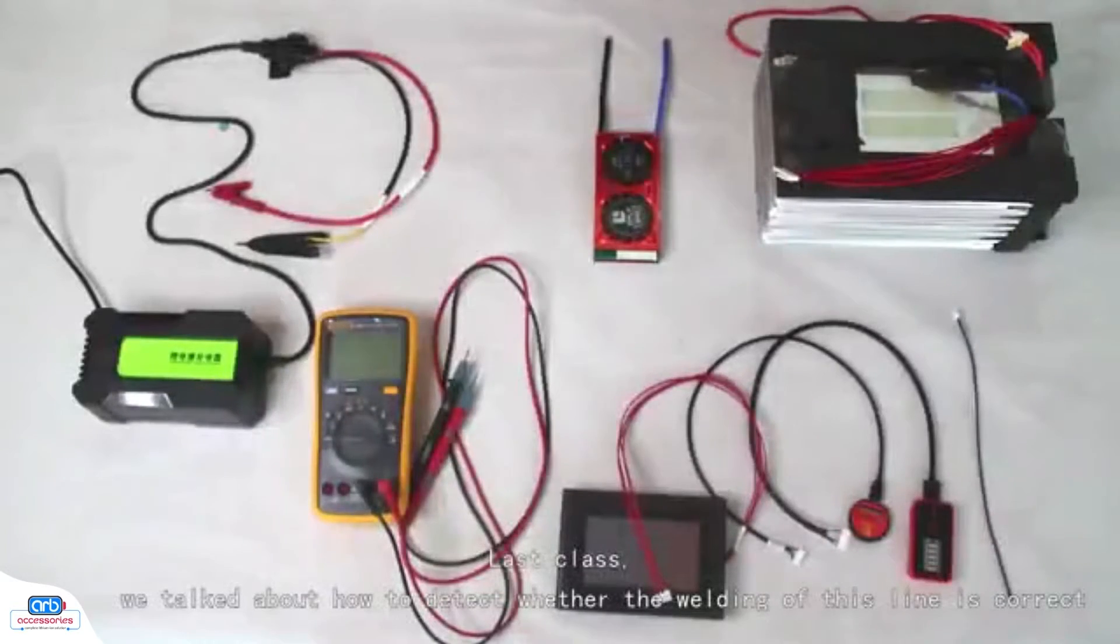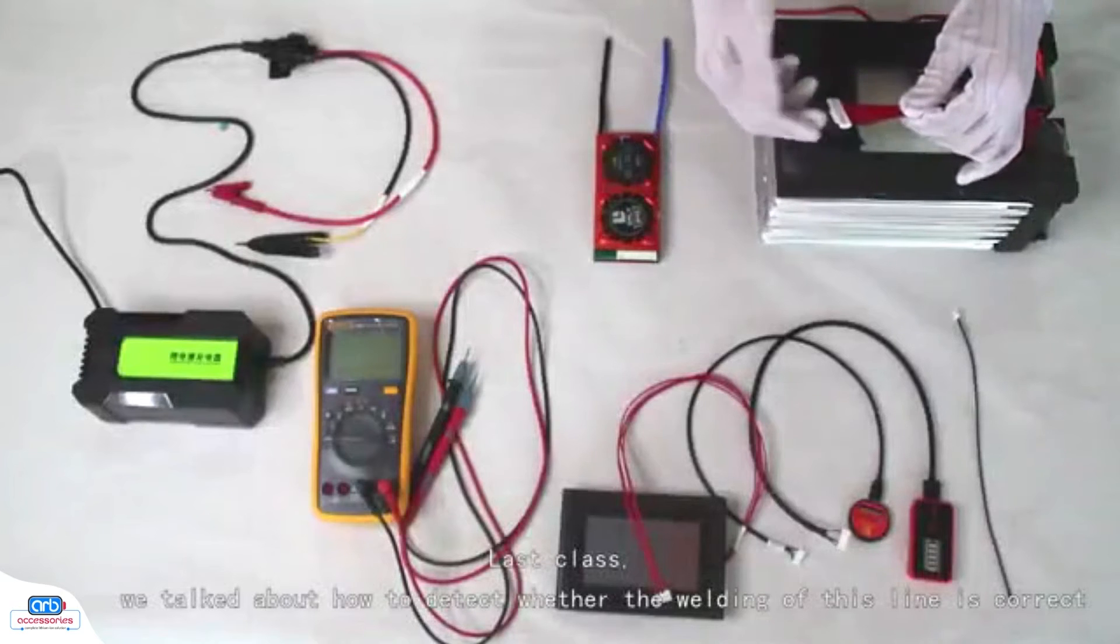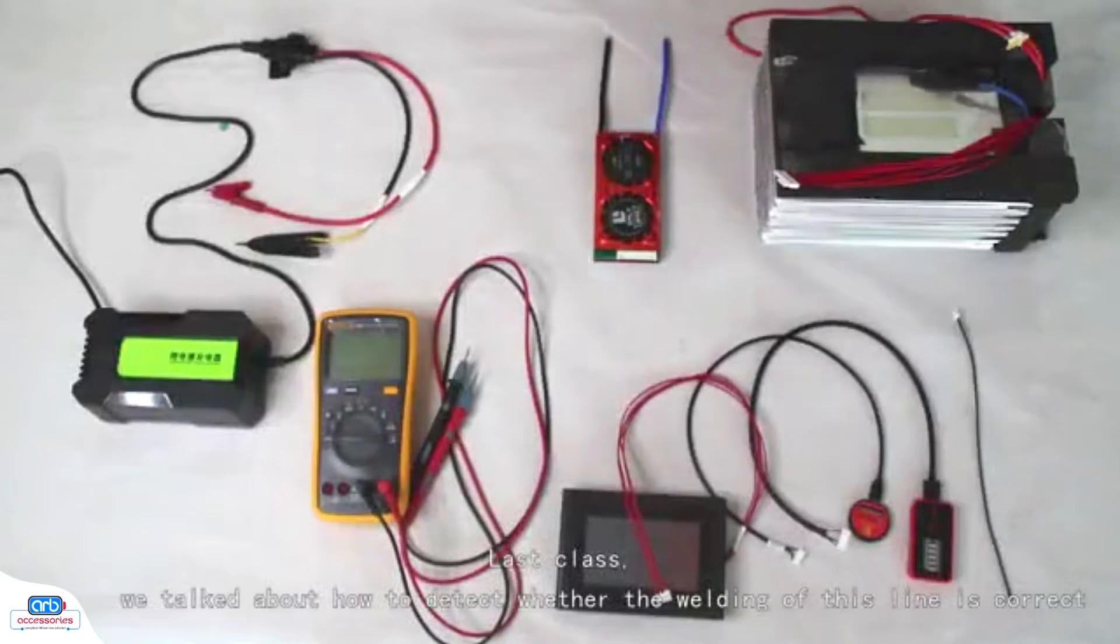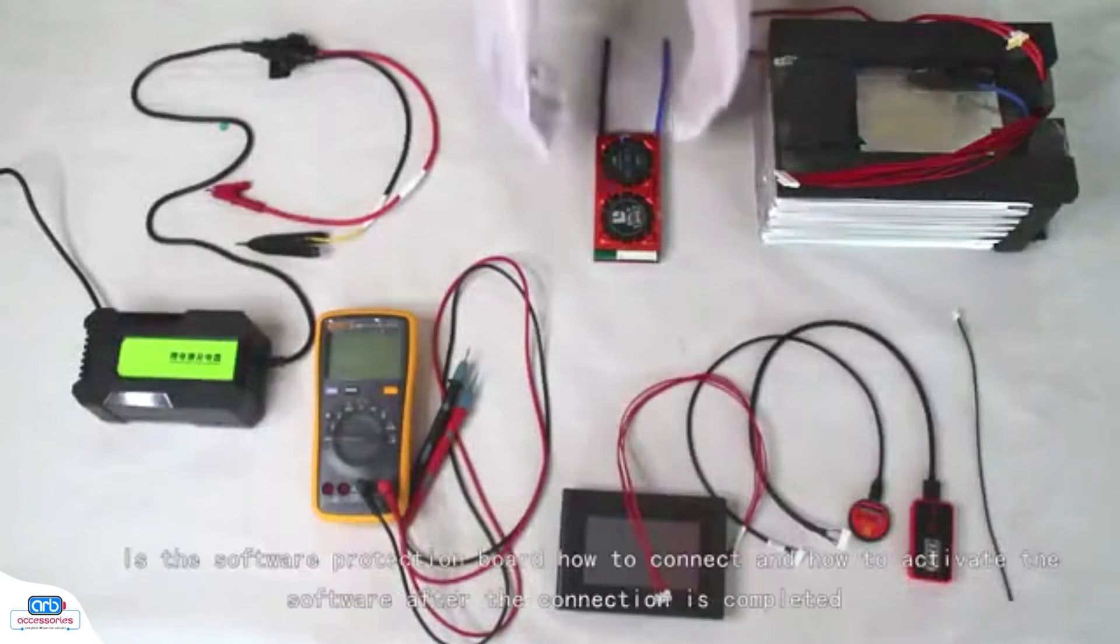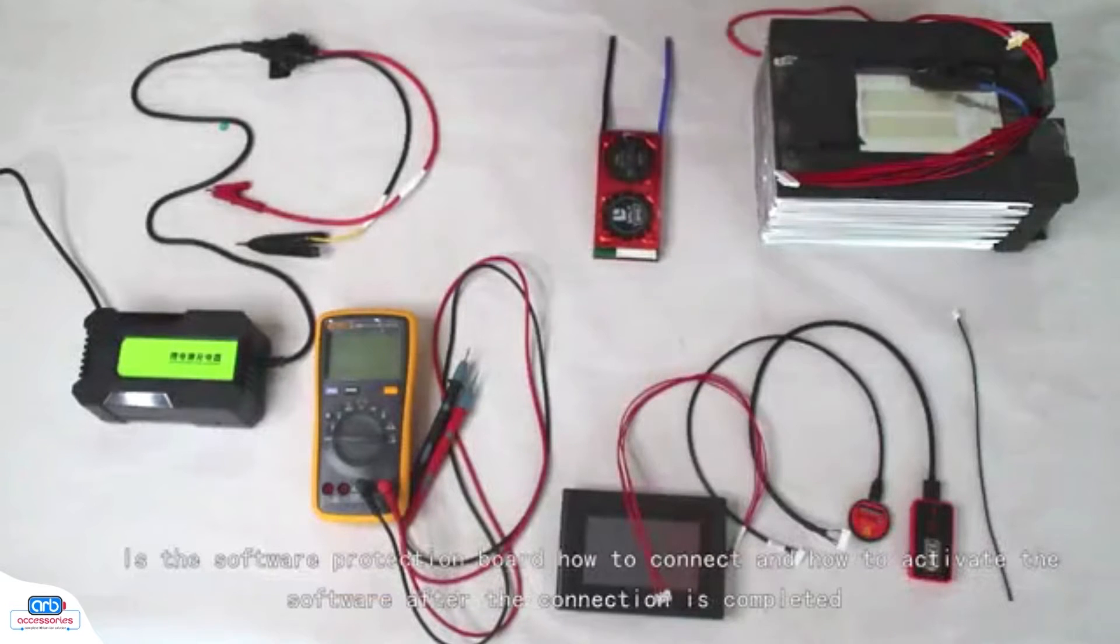Last class, we talked about how to detect whether the welding of this line is correct. This class is about the software protection board, how to connect it and how to activate the software after the connection is completed.